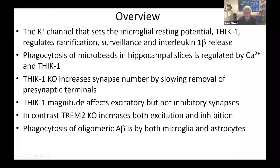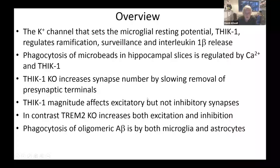As an overview, I'll start by telling you about the potassium channel that sets the resting potential of microglia, called THIK1, and how it regulates their ramification, surveillance, and interleukin-1β release. I'll show that phagocytosis measured with microbeads is regulated by THIK1 and calcium. Knocking out THIK1 increases synapse number in the hippocampus by slowing removal of presynaptic terminals. This effect occurs for excitatory but not inhibitory synapses, unlike TREM2 knockout which affects both. Finally, I'll remind us of the existence of astrocytes by looking at phagocytosis of oligomeric amyloid beta.